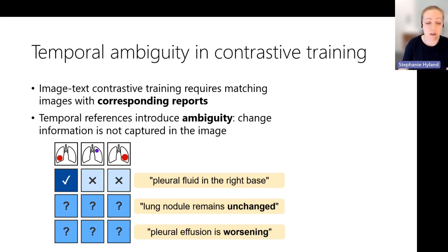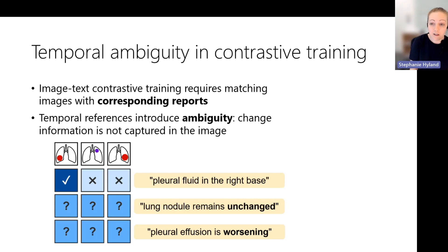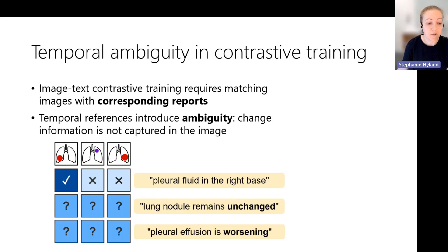The reason this is challenging is because it introduces temporal ambiguity during contrastive training. The idea behind image-text contrastive training is that we match images with their corresponding reports. But if the report contains a sentence like 'pleural effusion is worsening,' there's nothing in the single image representation which can capture that information. This produces ambiguity and noise in our InfoNCE affinity matrix.